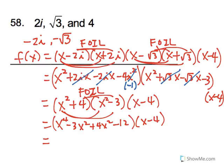And then the middle terms will combine into, or x to the 4th I mean, plus x squared minus 12, and finally multiplying x minus 4.